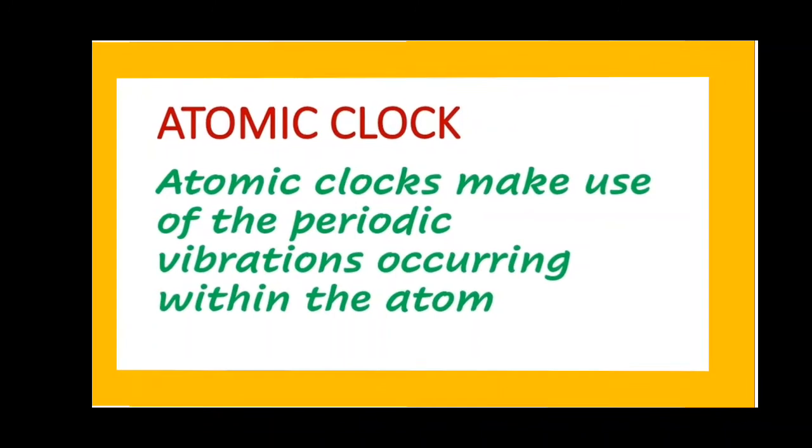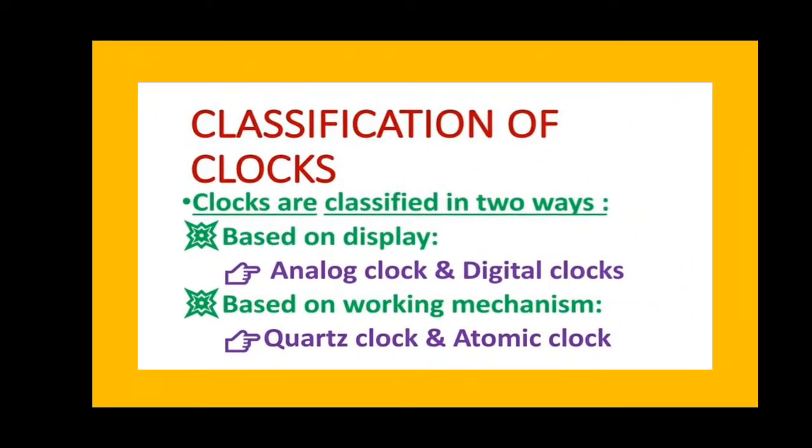Further, we can classify clocks based on the display and based on the working mechanism. Based on the display, clocks can be classified as analog clocks and digital clocks. And based on the working mechanism, clocks can be classified as quartz clock and atomic clock.